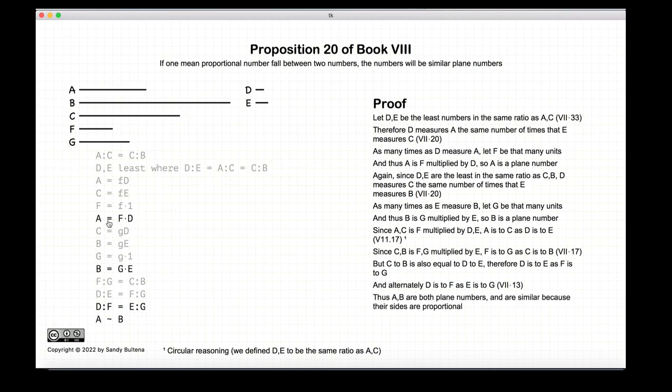So now we have that A and B are both plain numbers and the ratios of D to F is equal to the ratio of E to G. So A and B are also similar plain numbers. And thus we have concluded our proof.